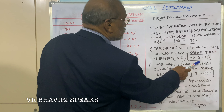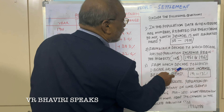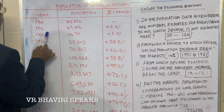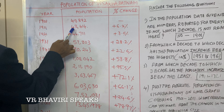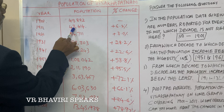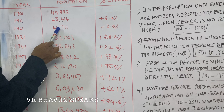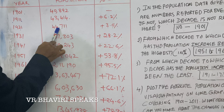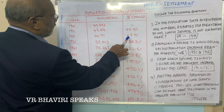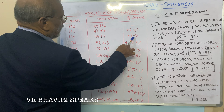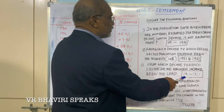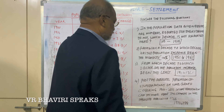Question three: from which decade to which decade has the population increased the least? The answer is 1911 to 1921. In 1911, the population is 43,414 with a percentage change of plus 6.2%. In 1921, the population is 44,711 with a percentage change of plus 3.0%. So 1911 to 1921 is the answer.